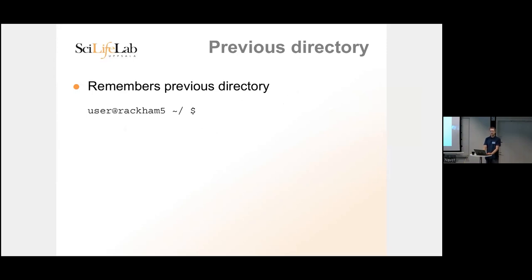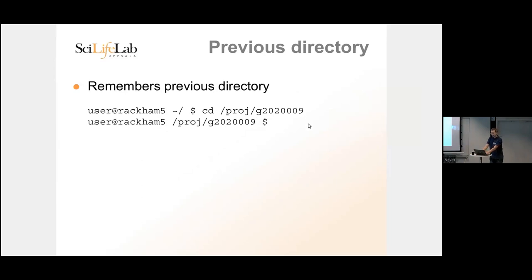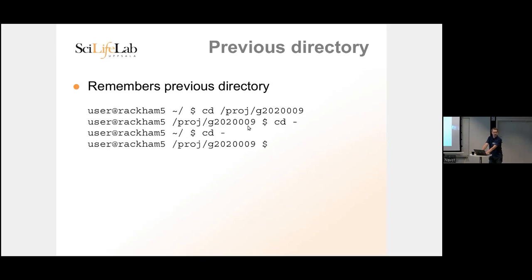Bash has a built-in function that remembers the previous directory you were in — it only remembers one step back. If you're in your home directory and cd into a project directory, typing 'cd -' and pressing Enter jumps you back to where you were before. Running it again takes you back to the project directory. It's handy for quickly checking something and then jumping back.